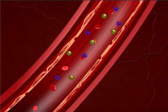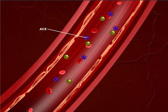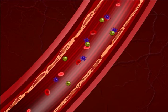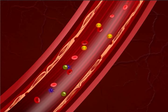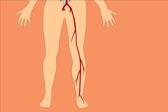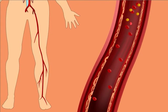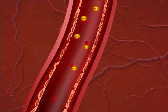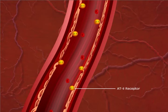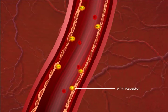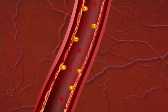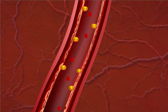In the lungs, angiotensin-1 is converted by angiotensin-converting enzyme, or ACE, into angiotensin-2, which then travels to the peripheral arterioles. Angiotensin-2 binds to its receptors in the blood vessels, causing vasoconstriction. Angiotensin-2 increases the total peripheral resistance, which in turn raises the systemic blood pressure and increases afterload.